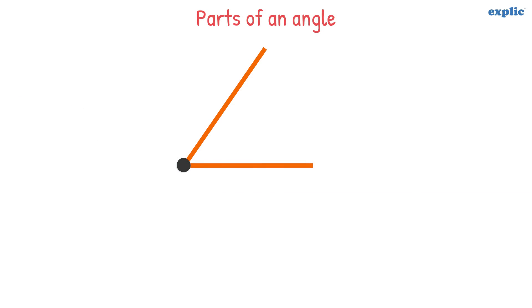There are two main parts of an angle. The rays or lines that make the angle are called sides, and the meeting point is called the vertex.